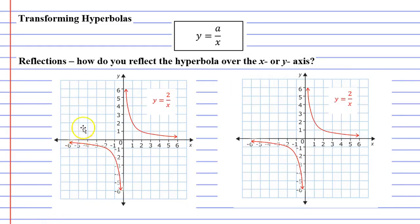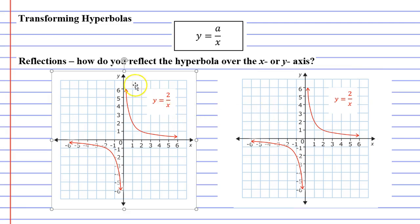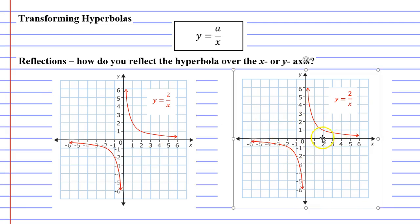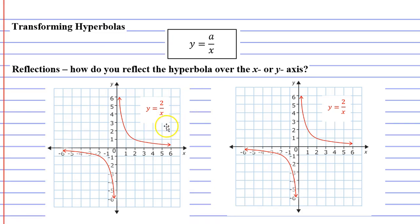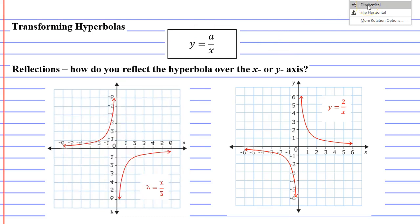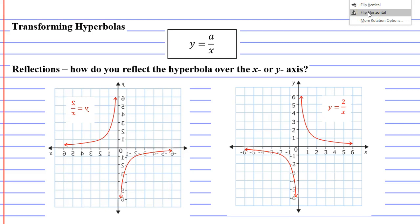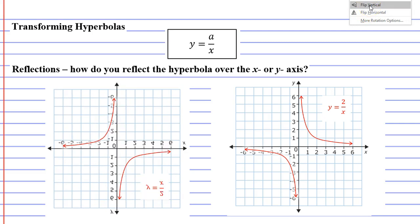Our next transformation is reflection — learning how to reflect the hyperbola over the x or the y-axis. Whether you reflect it over the x or the y-axis it's going to look exactly the same, and I'm going to demonstrate that. I'll reflect one image over the x-axis and the other over the y-axis using PowerPoint's flip options — flip vertical is the same as reflecting over the x-axis.